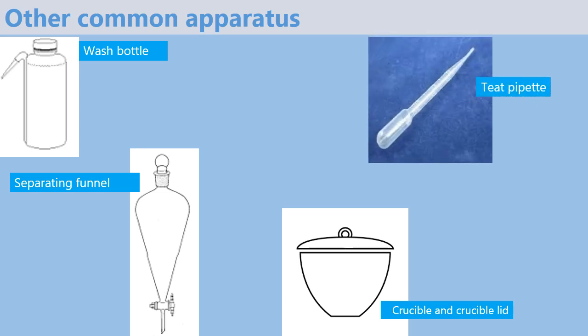Next is a teat pipette, or sometimes it is called a dropper. It is used for delivering liquids drop-wise.